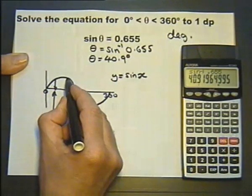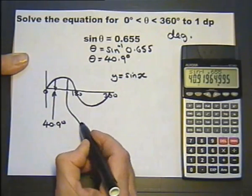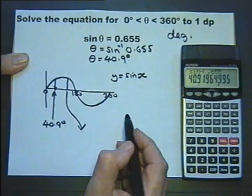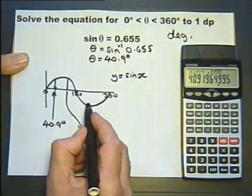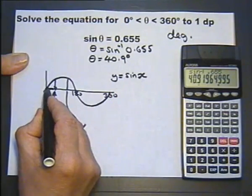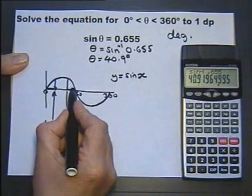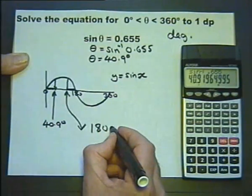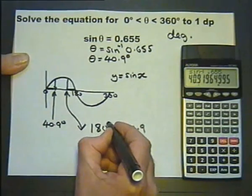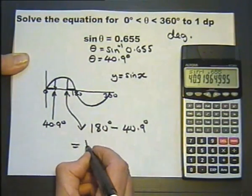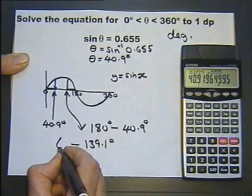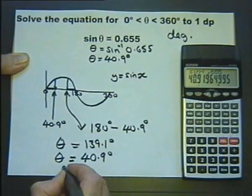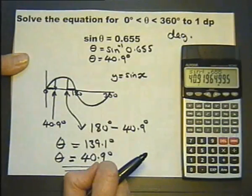40 degrees or 40.9 degrees is about there. And looking at the symmetry of the graph, this here must be another angle with exactly the same sine value of 0.655. That value is representing 40.9, so the angle I'm after is 180 minus 40.9, and that works out at 139.1 degrees. So there's two values for theta, one that the calculator gave me and the other one I worked out by doing a little sketch of the graph.